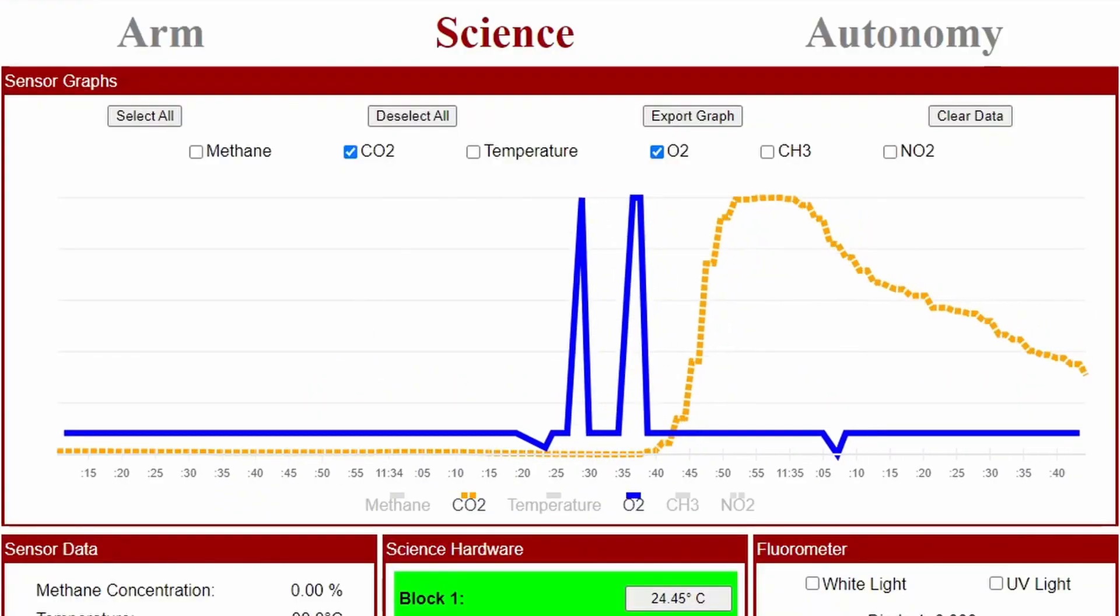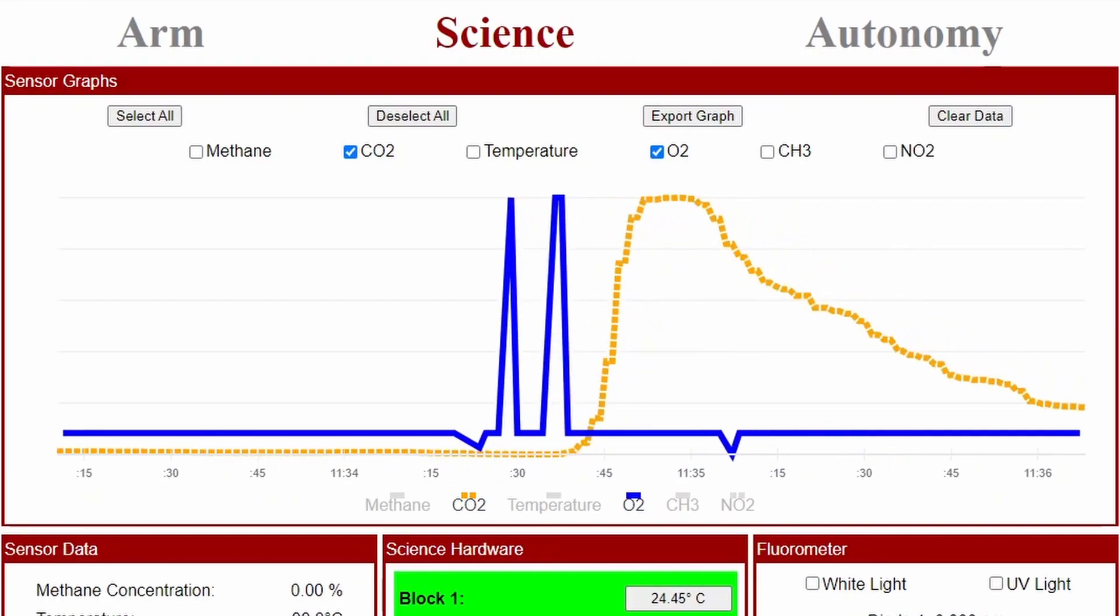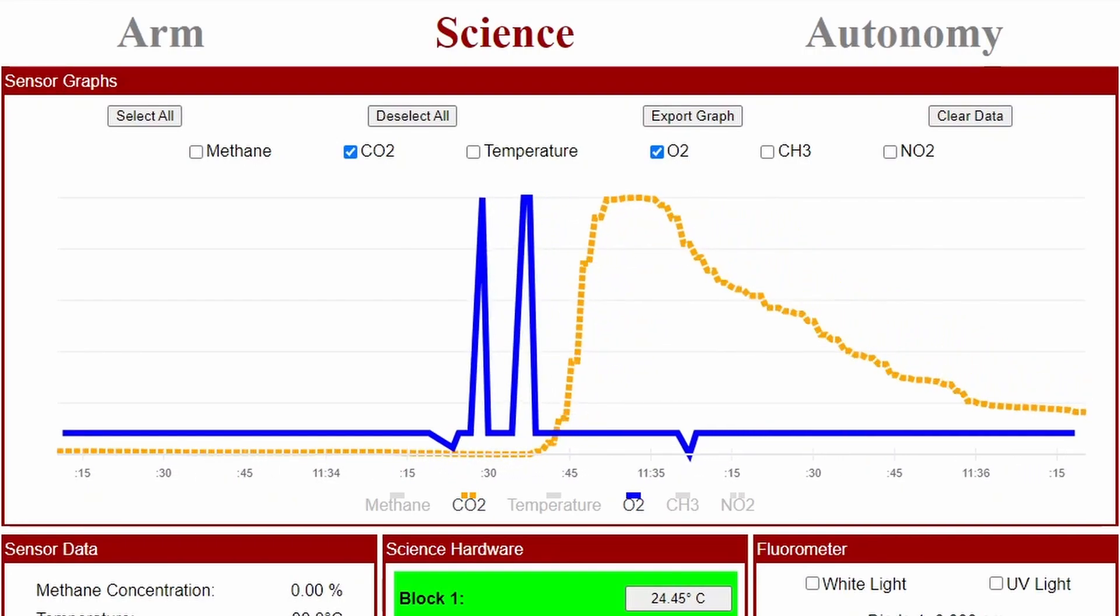The sensors will detect concentrations of oxygen, carbon dioxide, methane, nitrogen dioxide, and nitrogen monoxide near soil and rock sites.